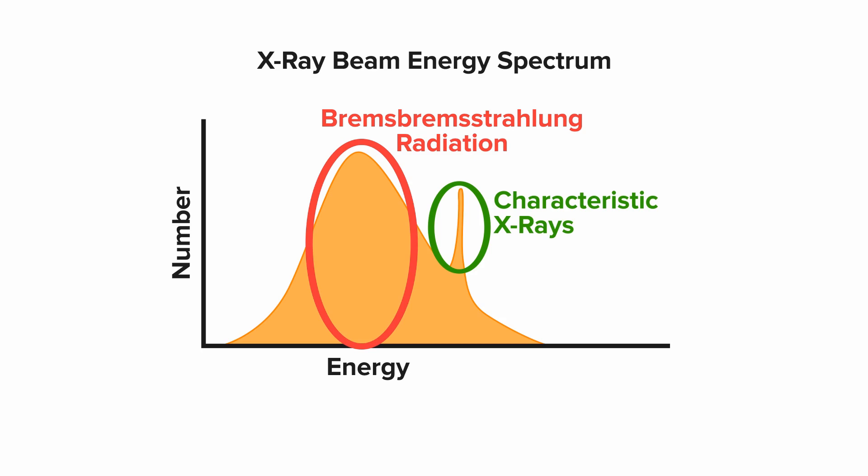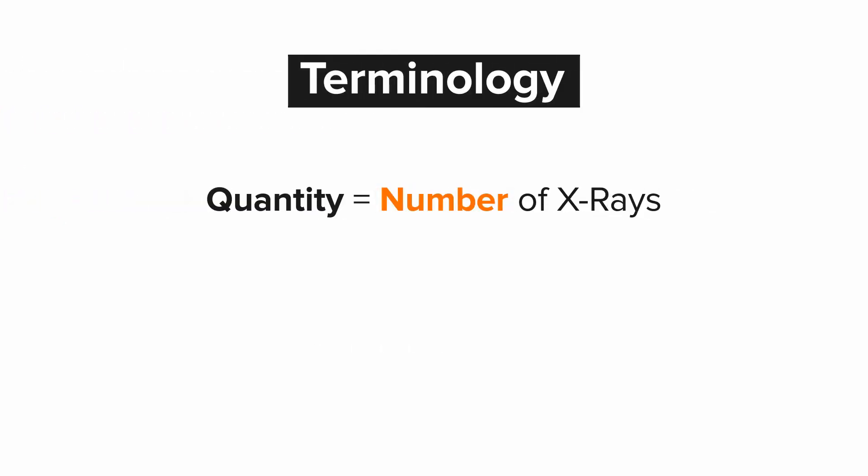When we're describing the number and energy of the X-ray beam, it's actually good to use some specific terms. The term quantity in the context of X-ray physics refers to the total number of X-rays in the beam. We sometimes call this the beam intensity. Quality is a term that refers to the average energy of the X-ray beam. Sometimes we just call this energy. The terms quantity and quality are also discussed in greater detail in other lessons.